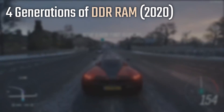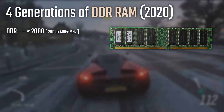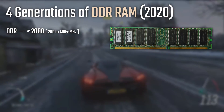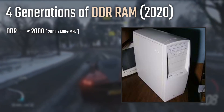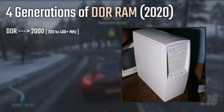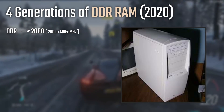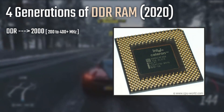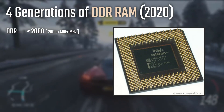We currently have four generations of DDR RAM. DDR, the first, was released in 2000. In fact, my first PC used DDR 400 MHz. Funnily enough, the RAM kit had the same frequency as my CPU, which was an Intel Celeron. Good times.